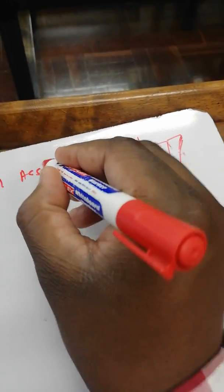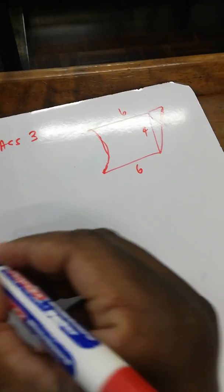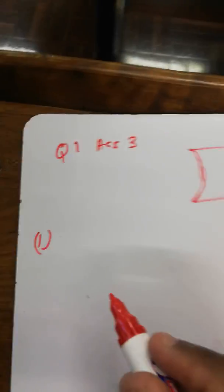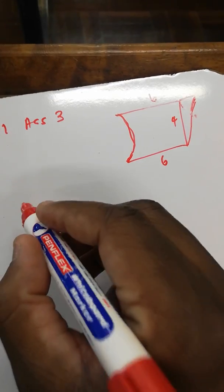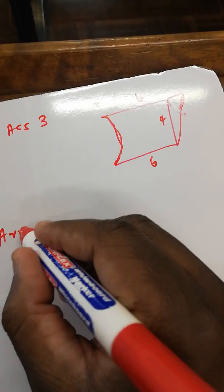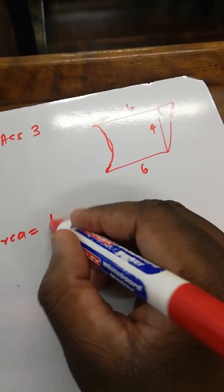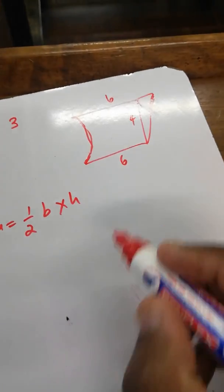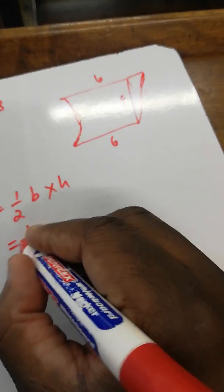We calculate the area of the triangle. So we say area equals one over two times base times height.